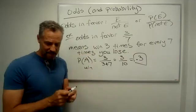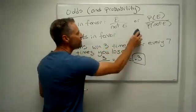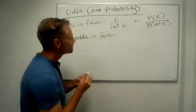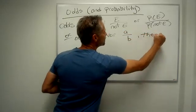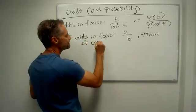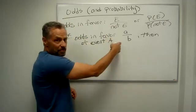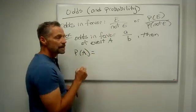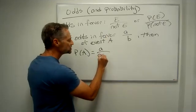So the idea goes like this: if we have odds in favor of A over B, then the probability that event A happens is A over A plus B. That's the probability of a win or victory or whatever it is.